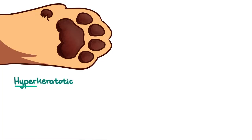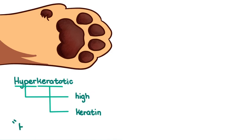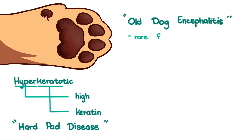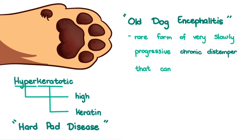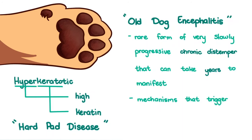In some dogs, their nose and foot pads become hyperkeratotic — hyper meaning high and kerato referring to keratin. Essentially, the pads become thick with keratin and hard, giving the disease the moniker hard pad disease. A syndrome known as old dog encephalitis is a rare form of very slowly progressive chronic distemper that can take years to manifest, and the mechanisms that trigger this are still unclear.